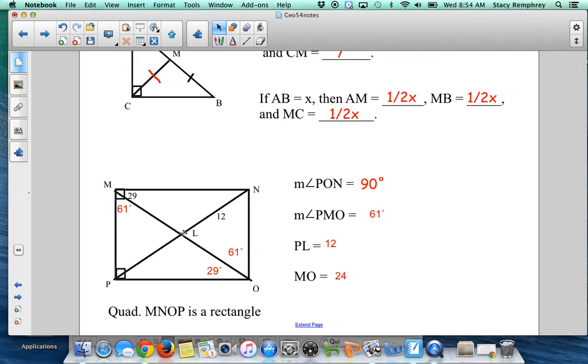I know PL is 12 because a rectangle is a type of parallelogram and diagonals bisect each other. So PL should be 12. And I know MO is 24 because in a rectangle, the diagonals are equal. So if PN is 24, then MO is also 24.